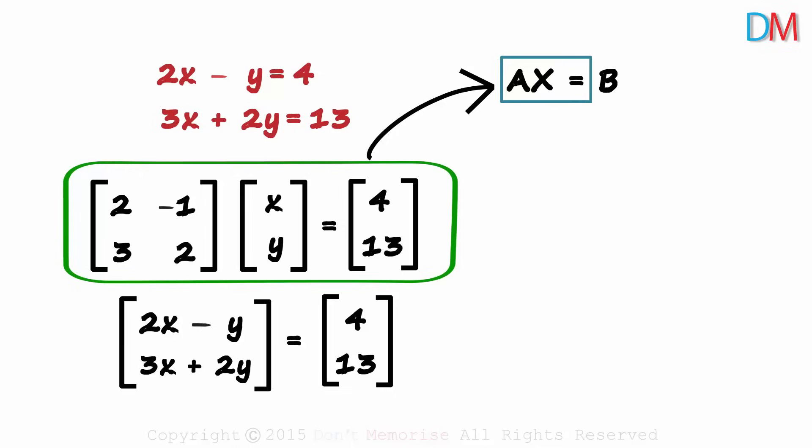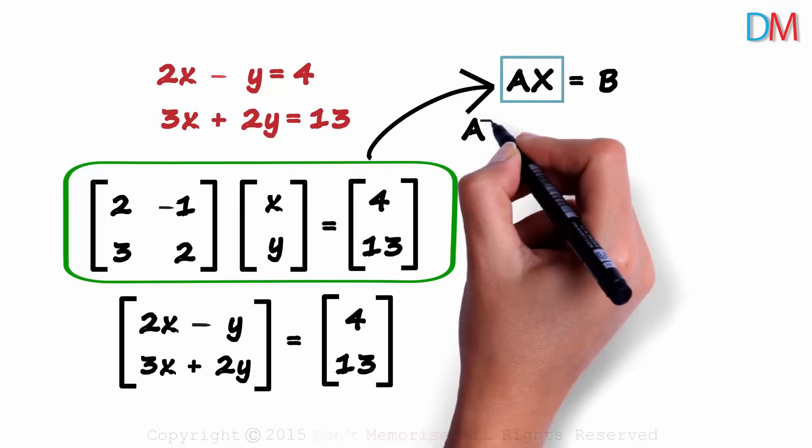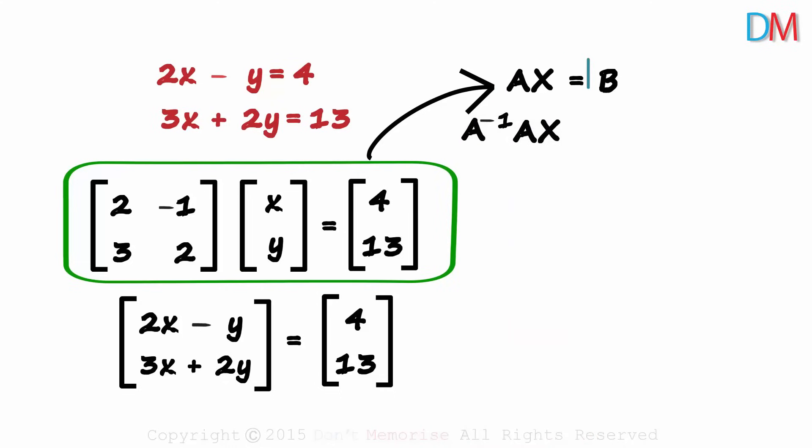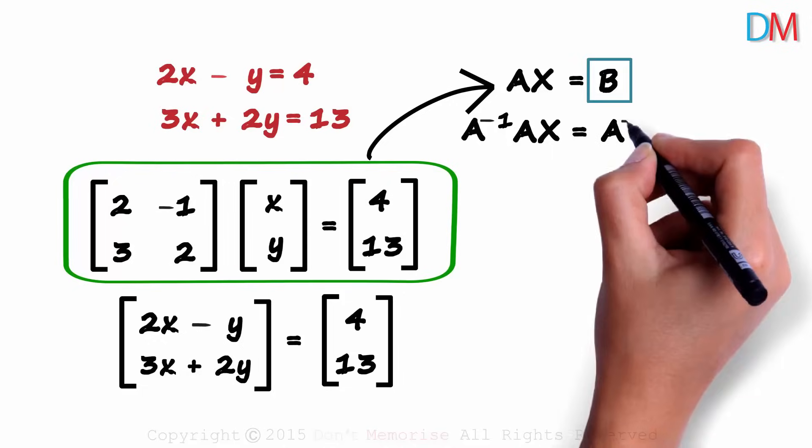A times X is equal to B. What we are interested in is matrix X. That will give us the values of variables x and y. So to get X on the left hand side, we multiply both sides with A inverse. We get the left hand side as A inverse times AX and the right hand side as A inverse times B.